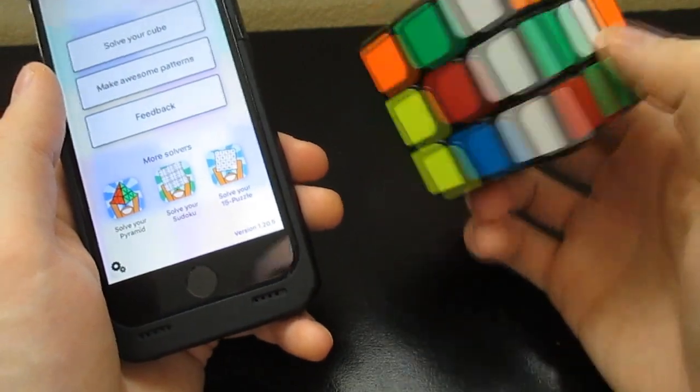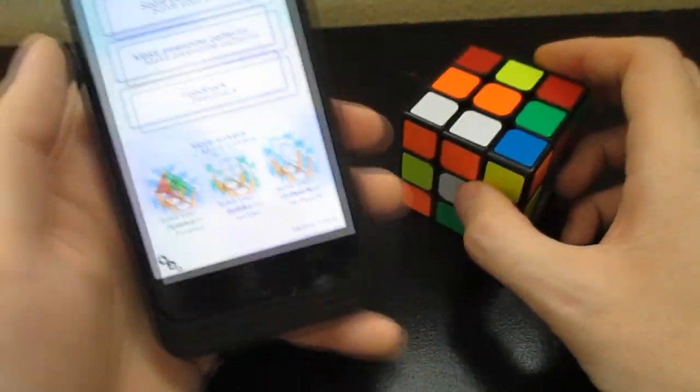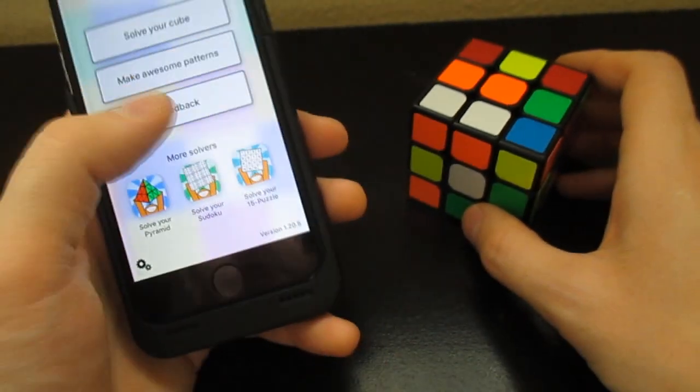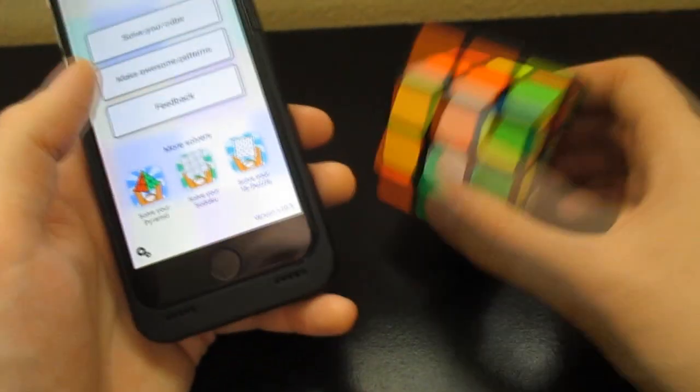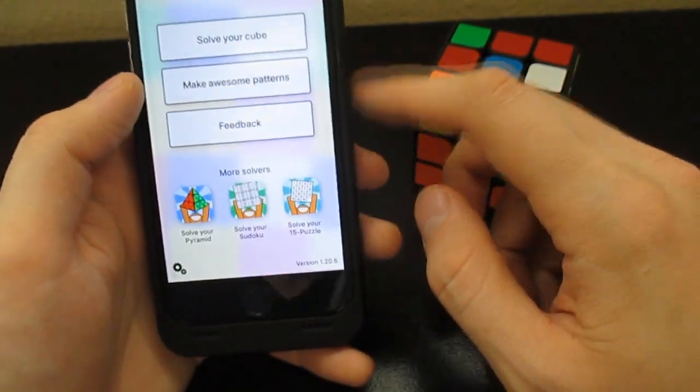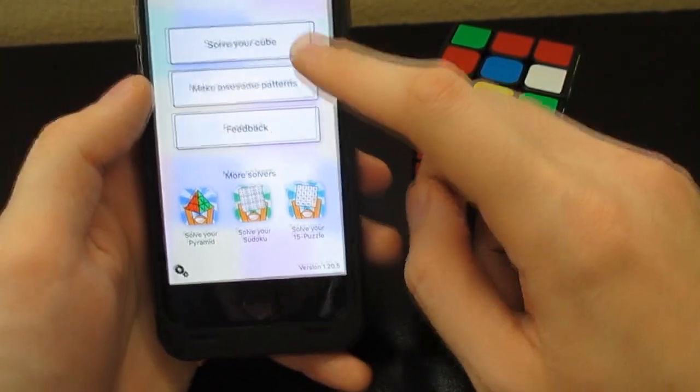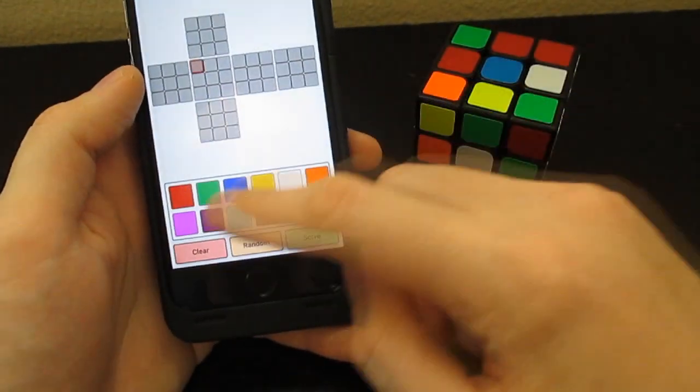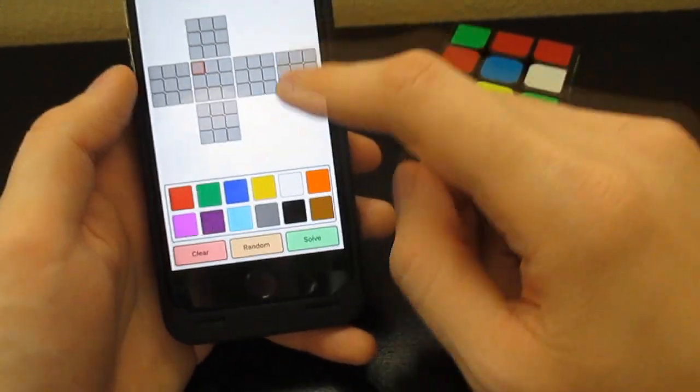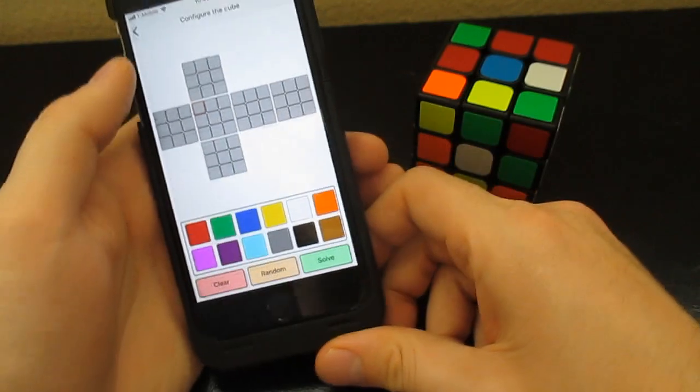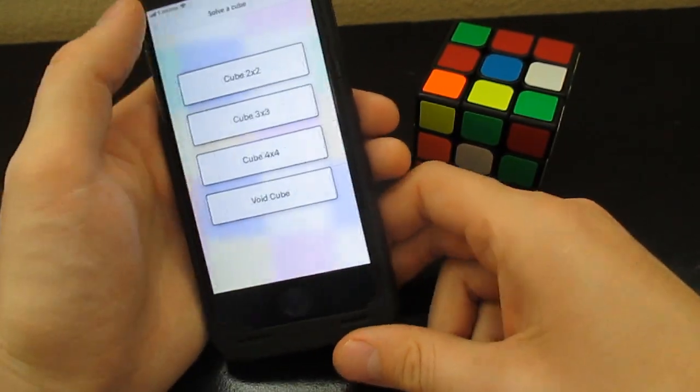So it doesn't matter how scrambled the cube is, this app will find a solution from any scramble that you just scrambled. You just input colors on here and put that right on here. Here's a 3x3, you have colors here.